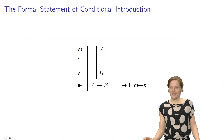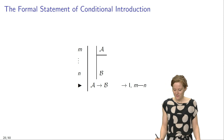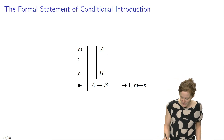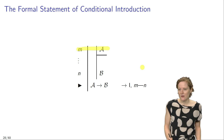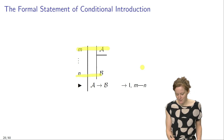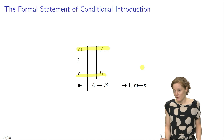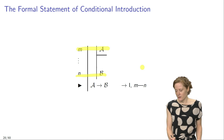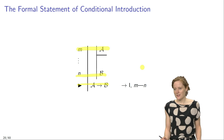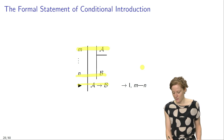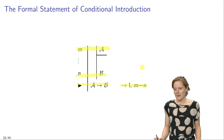Formally speaking, conditional introduction looks like this. If under the supposition that A you can infer B, then you are licensed to infer the conditional if A then B, and justify this inference by citing the rule conditional introduction as applied to lines M to N.